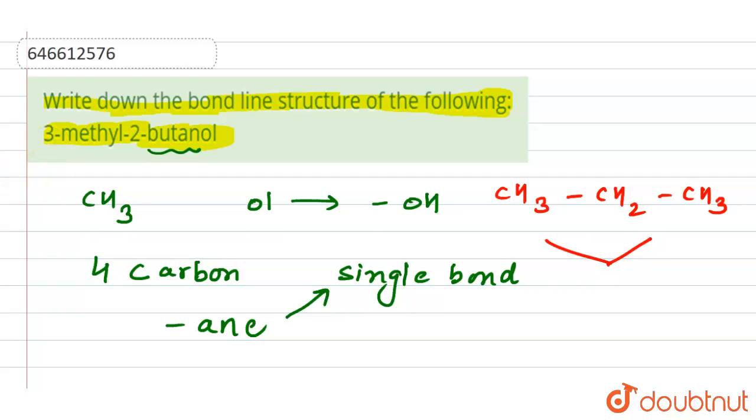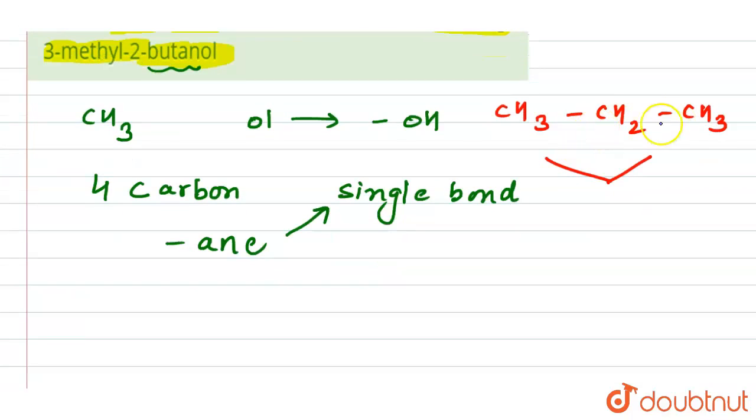So first we will draw the representation like this. We can have this structure: one, two, three, and four. These are connected to each other by single bond. At the second position we have the OH group, at the third position we have the CH3 group.